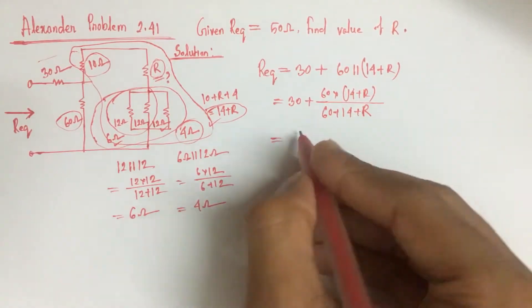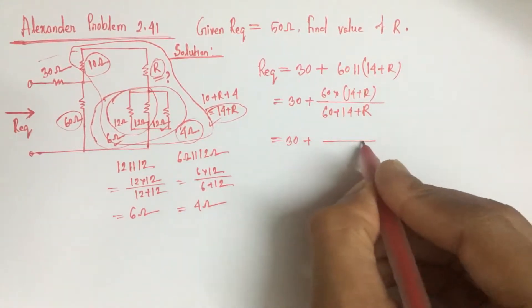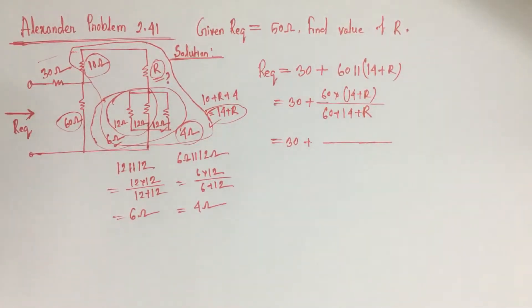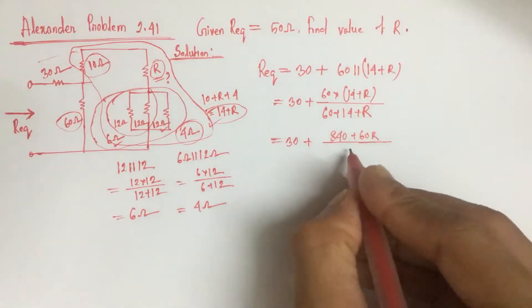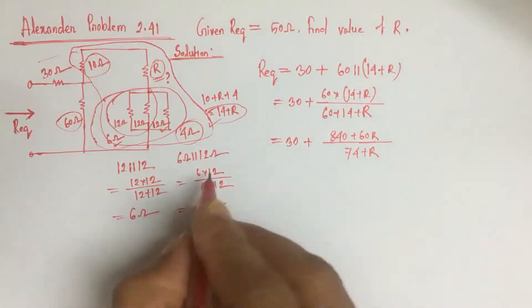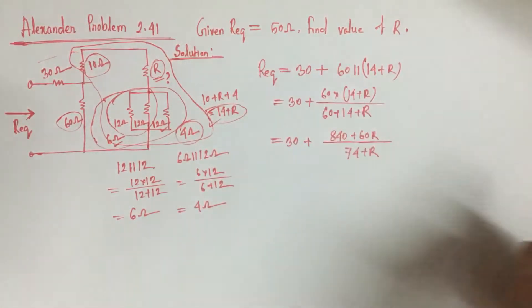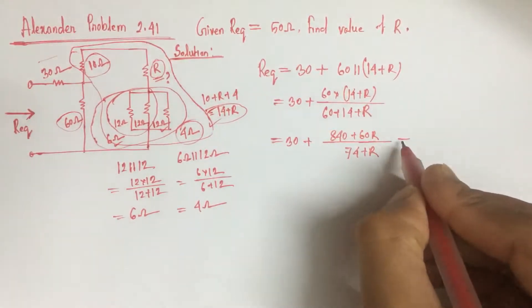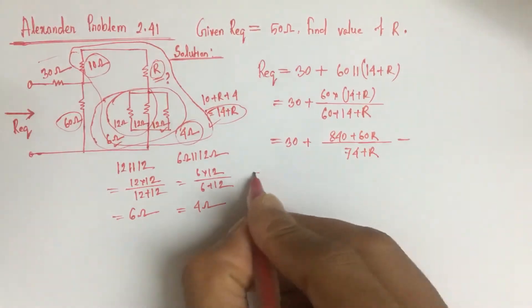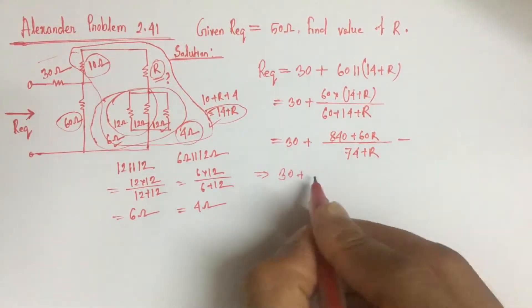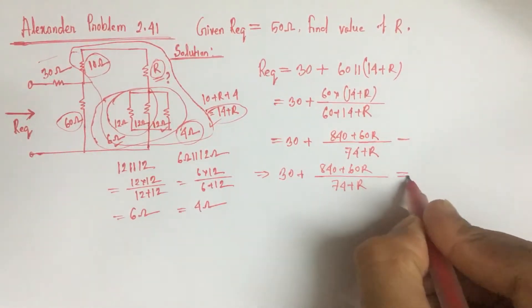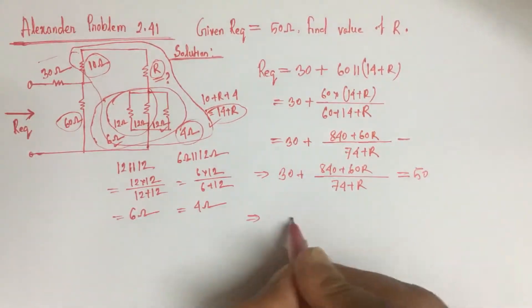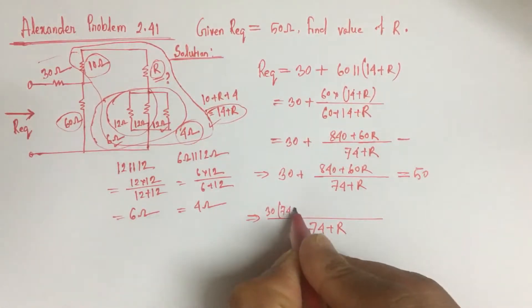That is 30 plus 60 into 14, which is 840, plus 60R by 74 plus R. Now we see that the value of R equivalent is given as 50 ohm, so this is 30 plus 840 plus 60R by 74 plus R equals 50.